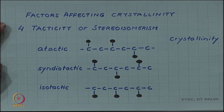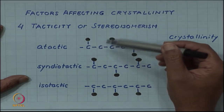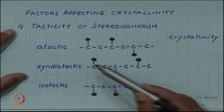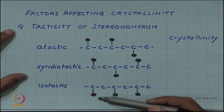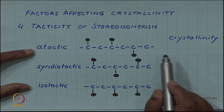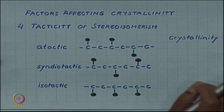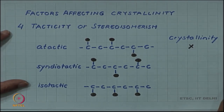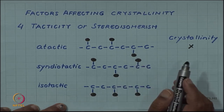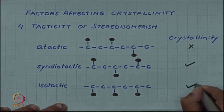Tacticity or stereoisomerism also affects crystallization. If there is a special side group, it can come on either side of the main backbone. If it comes randomly on either side, you have atactic; if alternately on each side, syndiotactic; and if all on the same side, isotactic. In an atactic polymer, because of the randomness of the side group, the main chain is random and cannot be arranged in crystalline form. Syndiotactic has an inherent periodicity within the chain and can be packed in a crystalline way, and the same is true for isotactic.